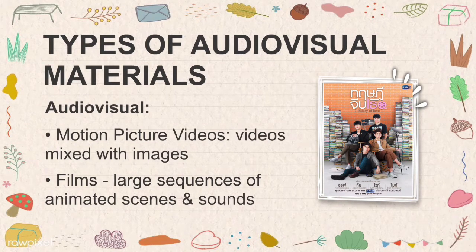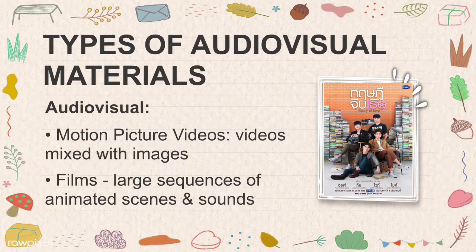For audiovisual we have motion picture videos and films. Motion picture videos are videos of sound mixed with motion images; these can be slideshows and presentations of images with audio. Films are large sequences of animated scenes and sounds — films reflect culture and in turn affect it. Films are considered an important art form, a source of popular entertainment, and a powerful medium for education.